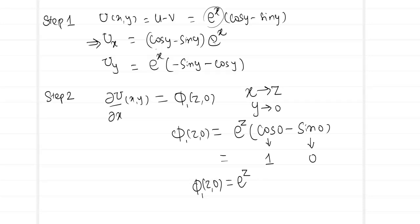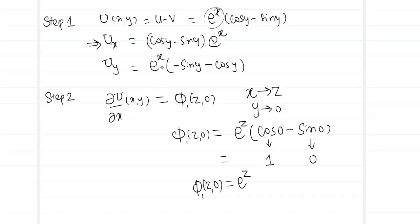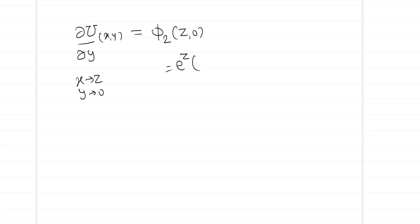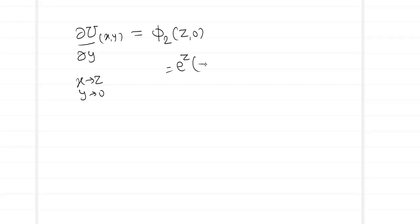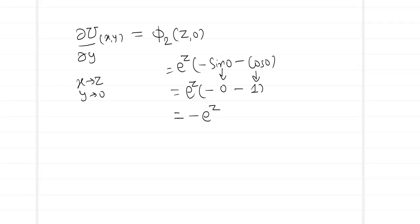Similarly, replacing x with z and y with 0 in U_y to form phi2(z,0): phi2(z,0) = e^z(-sin 0 - cos 0) = e^z(0 - 1) = -e^z. Step 2 is complete.